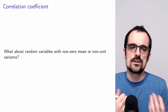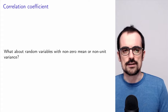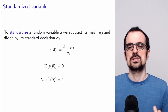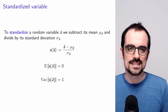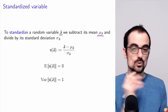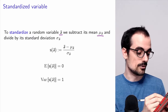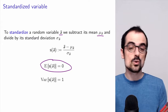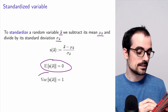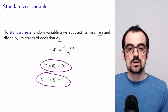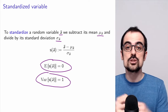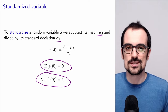What about random variables that have non-zero mean or non-unit variance? In order to generalize the definition to those random variables, we introduce an operation called standardization, where we take a random variable, subtract its mean to center it so that it has zero mean, and divide by the standard deviation to normalize it so that its variance equals one. The standardized version of a random variable has zero mean and unit variance, so we can apply the previous result to it.